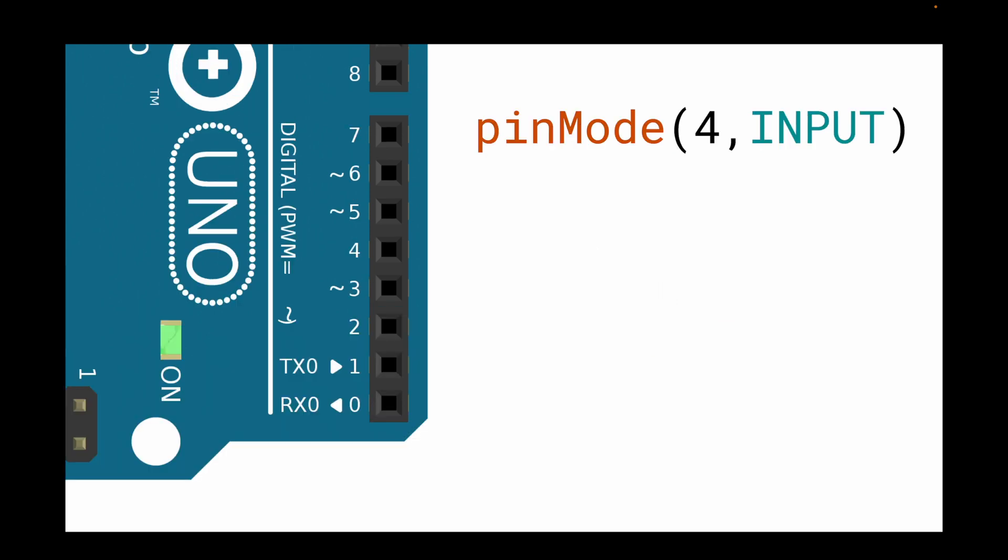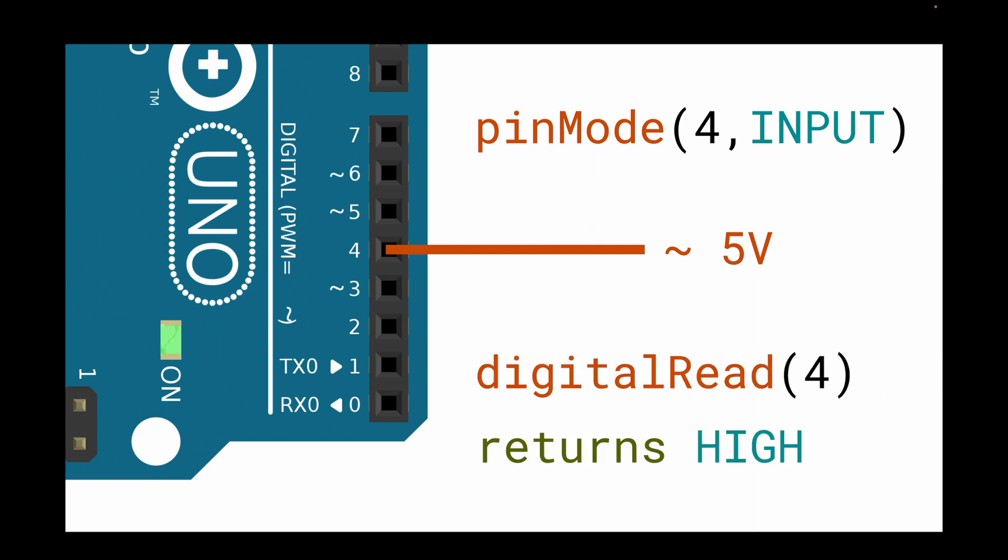We will use pinMode for INPUT to define pin 4 as input. If we now connect approximately five volts to pin 4 and then run digitalRead(4), it will return HIGH. If we connect approximately zero volts and then run digitalRead(4), it will return LOW.